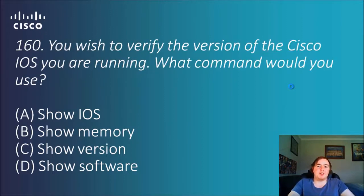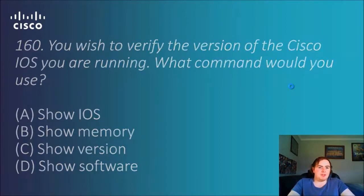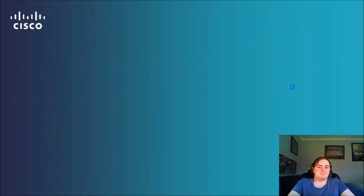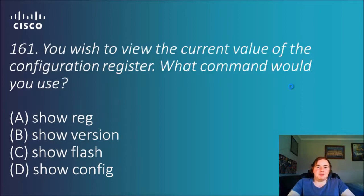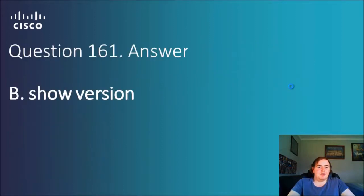Question 160: You wish to verify the version of the Cisco IOS you are running — what command would you use? Options: show IOS, show memory, show version, or show software. Once again, show version is the answer. Question 161: You wish to view the current value of the configuration register — what command would you use? Options: show reg, show version, show flash, or show config. Show version it is — wouldn't have expected that one.